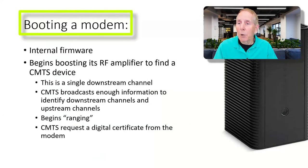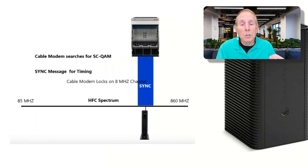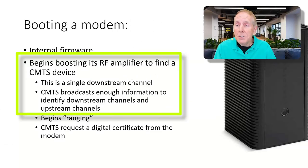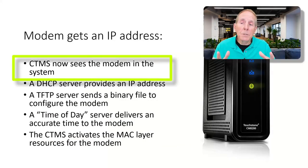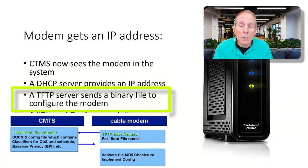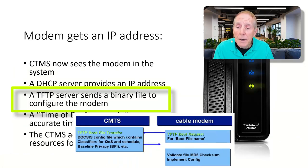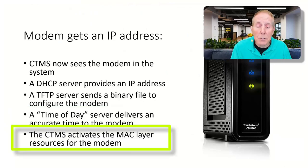So what happens when you boot a cable modem? First, you have internal firmware that begins initializing the hardware. Then the cable modem begins to boost its RF amplifiers to try to find a CMTS device. This looks for a single downstream channel. CMTS broadcasts enough information to identify downstream and upstream channels. The cable modem begins what's called ranging, begins to discover the RF parameters it needs. Then CMTS, if it has security built in, will request a digital certificate from the modem. At some point, the CMTS device will now see the modem in the system. The DHCP server will provide it an IP address. A TFTP server will send a binary file to configure that modem based on your service plan. A time-of-day server delivers accurate time to the modem, and the CMTS activates the MAC layer resources of that modem.